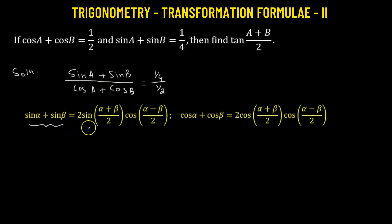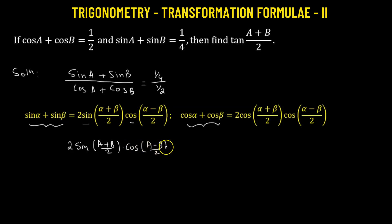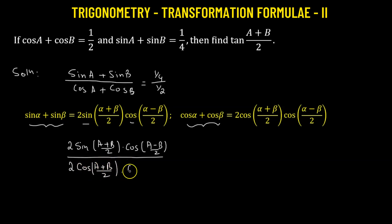If we have the sum of two sine functions, it transforms into a product of cosine and sine. If we have the sum of two cosine functions, it transforms into the product of two cosine functions. So in the numerator, sine a plus sine b becomes two times sine of (a plus b)/2 multiplied by cosine of (a minus b)/2. In the denominator, cosine a plus cosine b becomes two times cosine of (a plus b)/2 multiplied by cosine of (a minus b)/2.